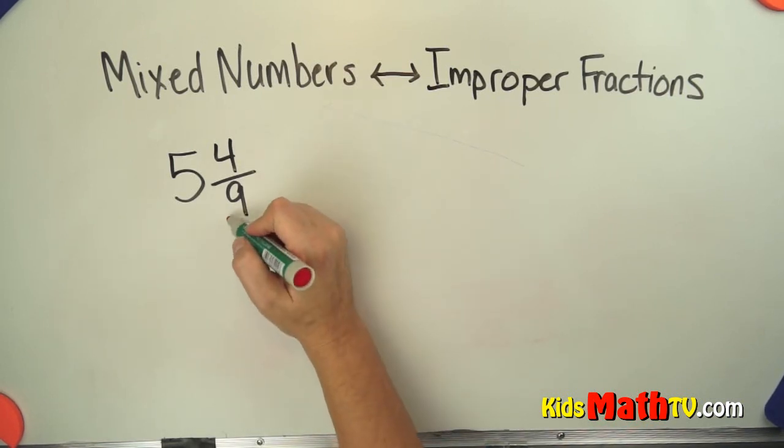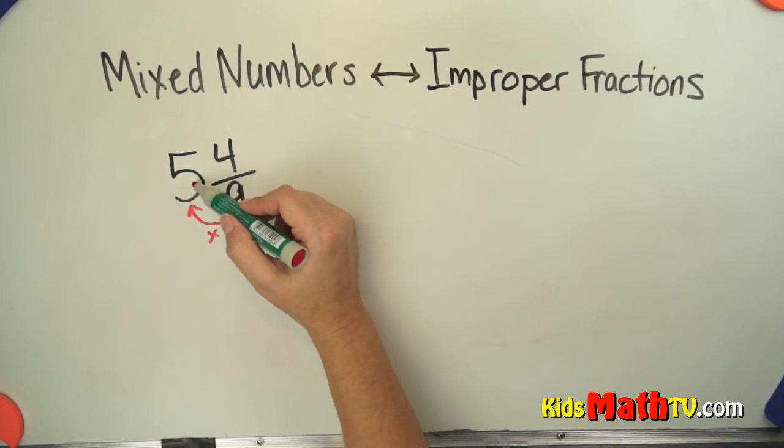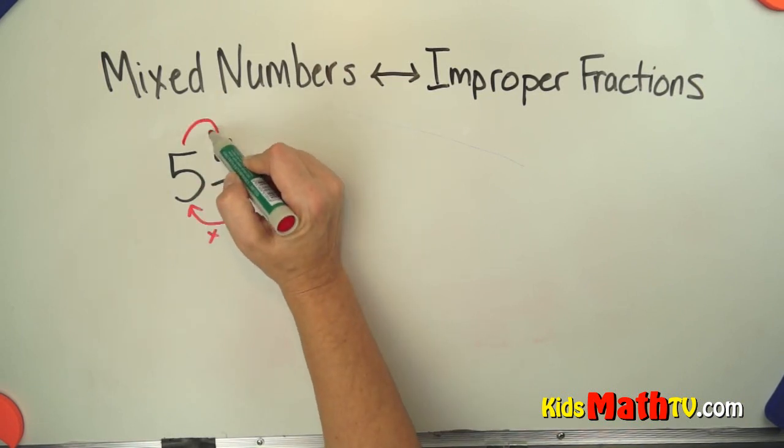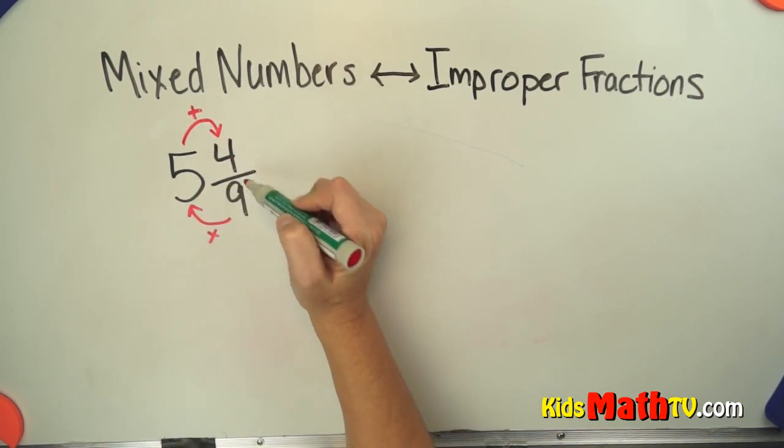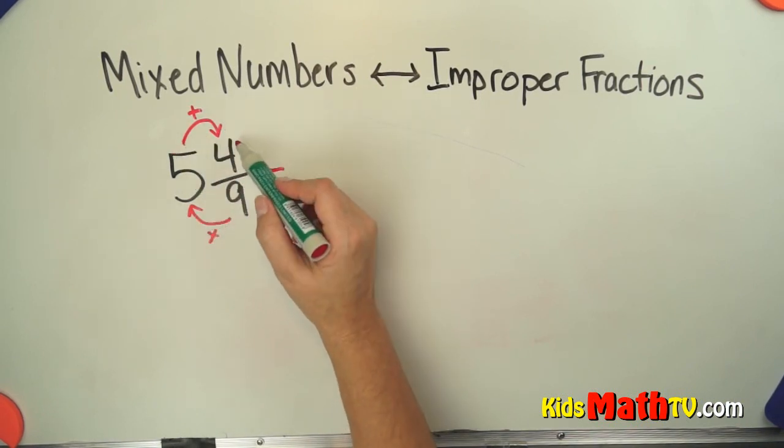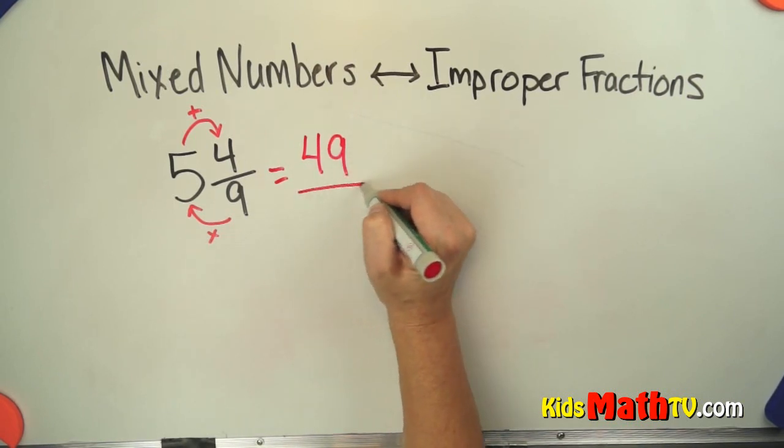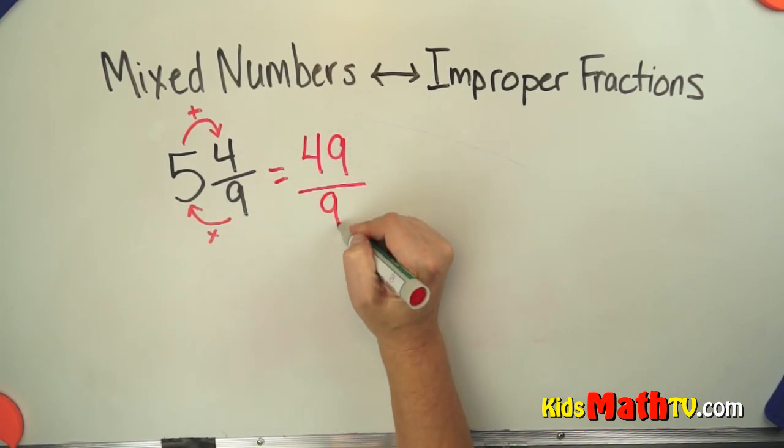The process is we take and multiply the denominator times the whole number. So 9 times 5 is 45 and then we add the numerator. 45 plus 4 more is 49 and the denominator stays 9.